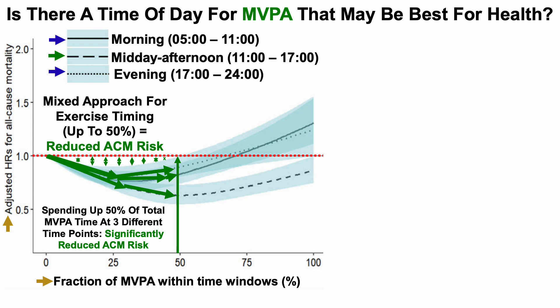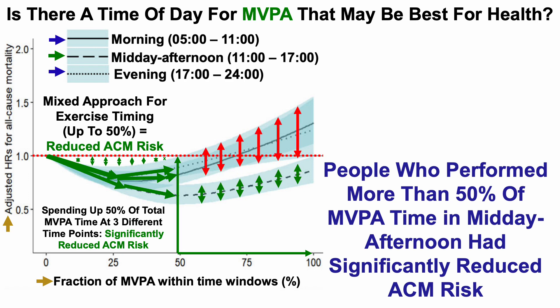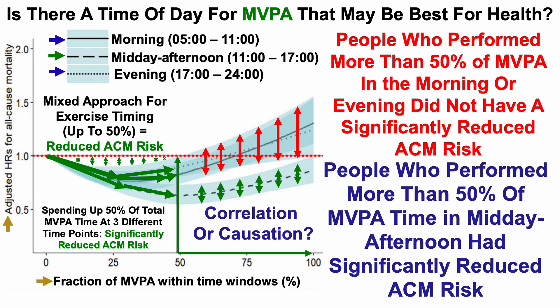Where it gets interesting is for people who spent more than 50% of their total exercise time in one time window. For people who performed more than 50% of their total MVPA in the midday to afternoon window, there was a significant further reduction in all-cause mortality risk, as indicated by the double green arrows. However, that was not true for people who performed more than 50% of their MVPA in the morning or in the evening. This suggests that performing the majority of exercise in the midday to afternoon may be best for reducing all-cause mortality risk. As a limitation, this is an association — correlation, not necessarily causation — and we will need randomized controlled trials to confirm whether training in the midday afternoon is truly better for health than exercising primarily in the morning or evening.